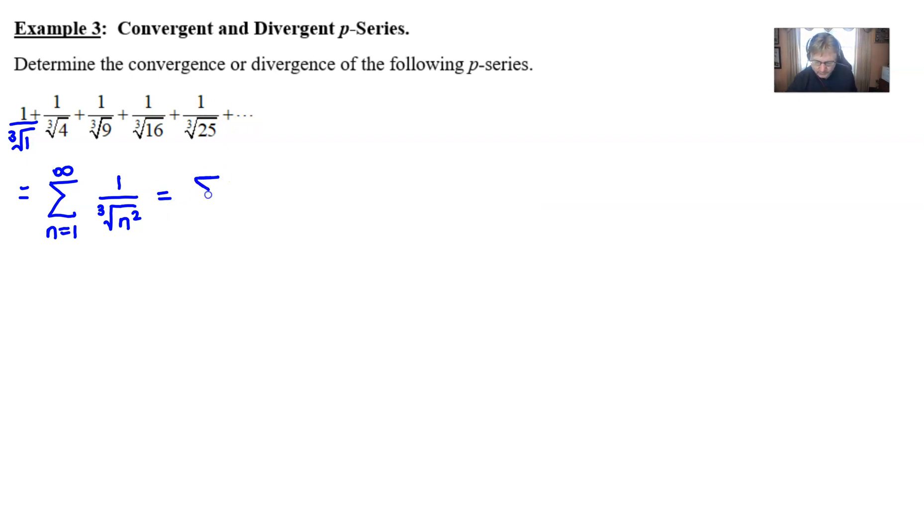Now, you might even want to write this a little bit differently using a fractional exponent. And this cube root of n squared is nothing more than n to the 2/3 power. And because your p is equal to 2/3, which is less than 1,